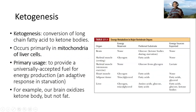Ketogenesis is the conversion of long-chain fatty acids to ketone bodies, and it occurs primarily in the mitochondria of liver cells. A primary usage of ketogenesis is providing a universally accepted fuel for energy production. This is an adaptive response in starvation. For example, our brain can oxidize ketone bodies but not fat directly.